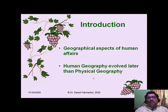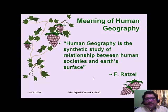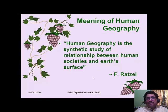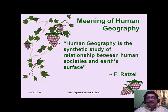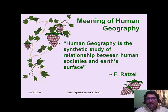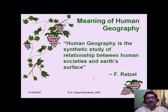Physical geography evolved first while human geography evolved later. Now for this purpose we will take up three definitions — note down these definitions carefully, especially the keywords. The first definition is by Frederick Ratzel. He says that human geography is the synthetic study of relationship between human societies and earth surface.